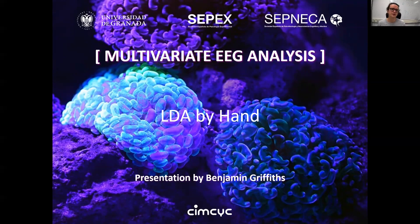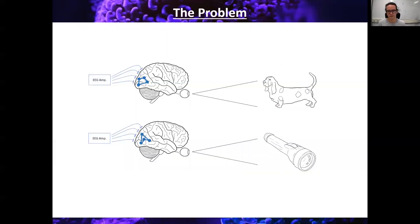Hello and welcome to this lecture. We'll be talking about how to do LDA analysis on EEG data using MATLAB code. So let me describe a quick classification problem to you. Let's imagine we've been recording some EEG data while participants are viewing particular objects, and we want to see whether we can decode the type of object they're looking at.